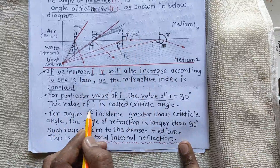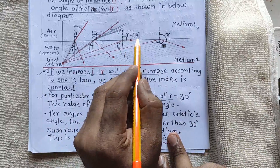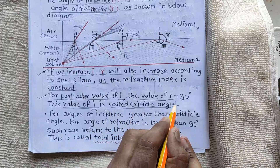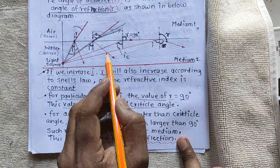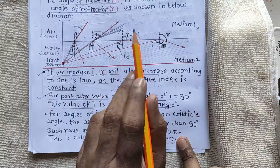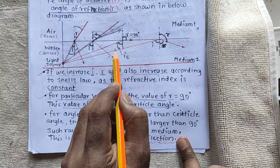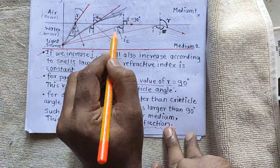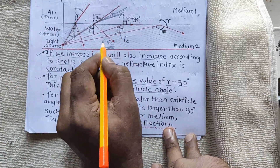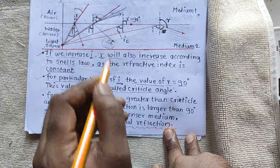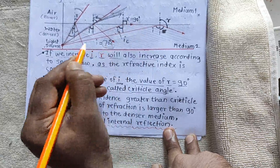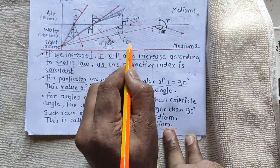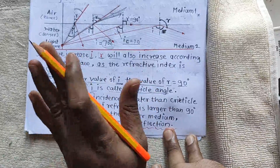One situation will come where we increase the incident angle so much that we get a refracted angle of 90 degrees. For a particular value of incident angle — which depends on the medium, like water or oil — the refracted angle becomes 90 degrees. That particular incident angle is called the critical angle.